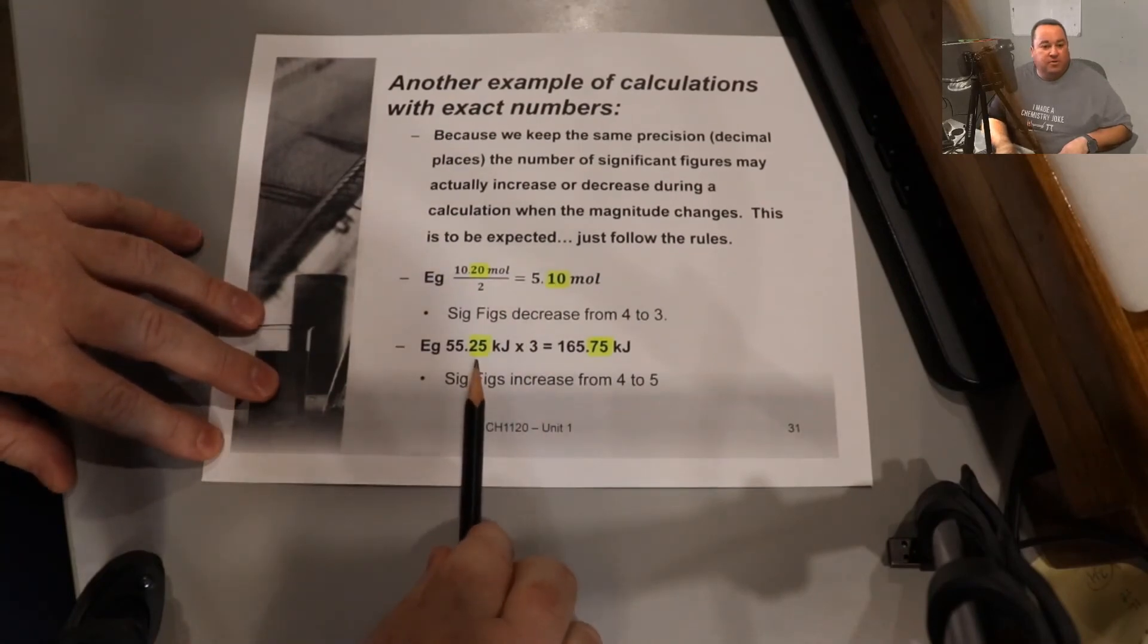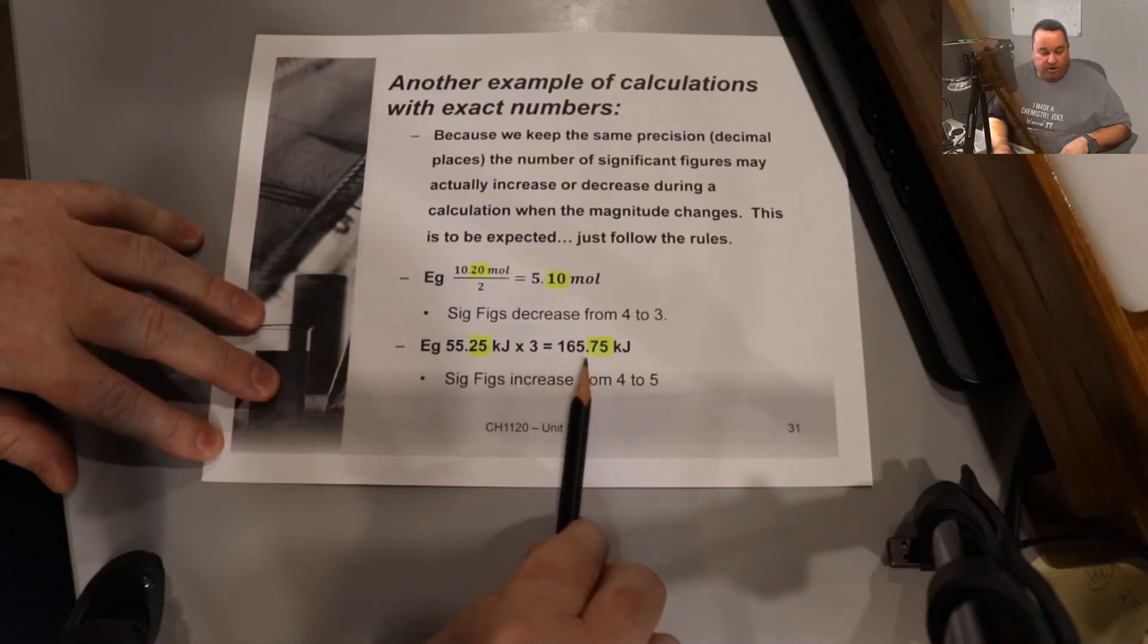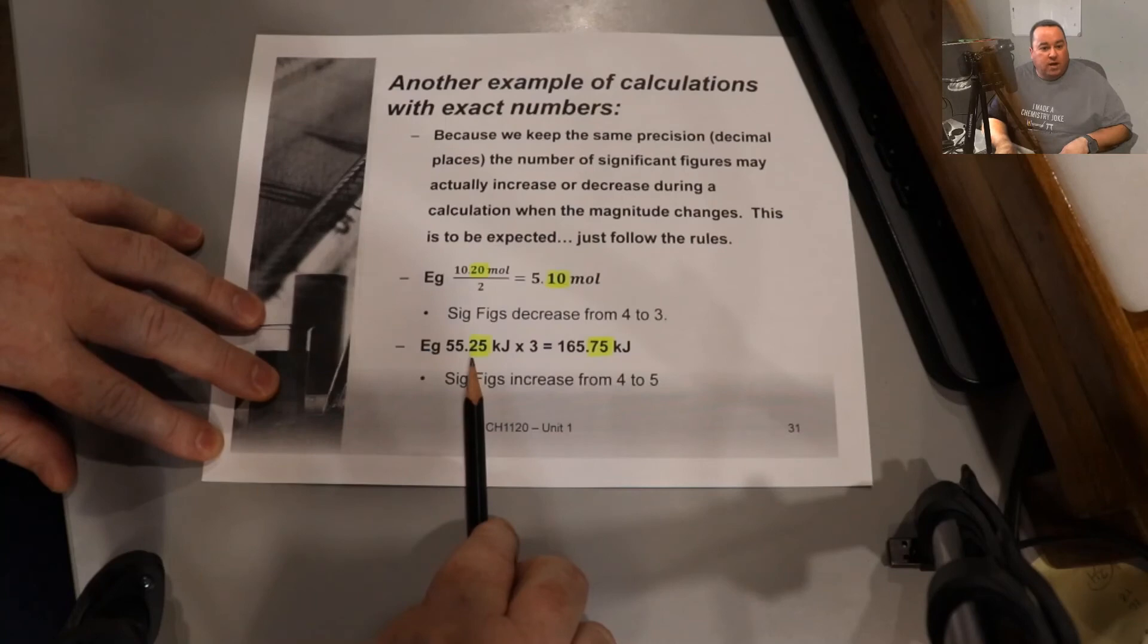Similarly, but in the opposite direction, if we're multiplying and the magnitude of the number increases, applying the rule and keeping two decimal places will mean that the sig figs increase from 4 to 5. But again, they should, and you've done everything properly.